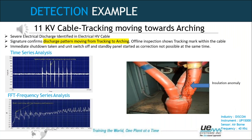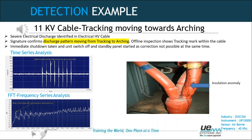Moving to the next detection example: an 11 kV cable where tracking was found — there was an insulation failure visible in the cable photograph. We took the reading from outside the panel through an air gap using our airborne sensor. After detection, we asked the customer to take maintenance action, and while doing so we found the insulation failure. The sound file and time series and frequency series graphs are shown on screen.